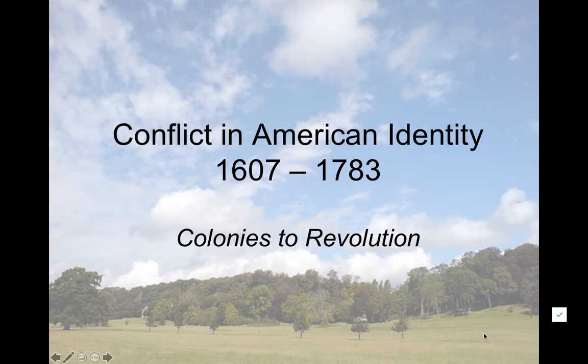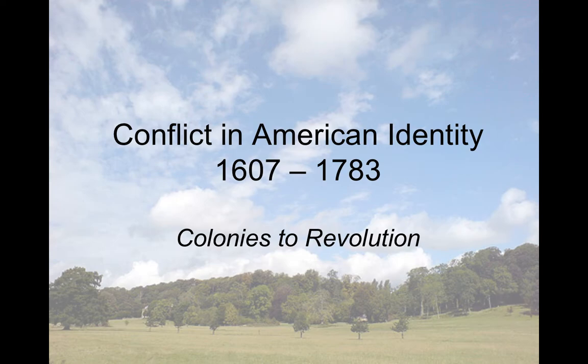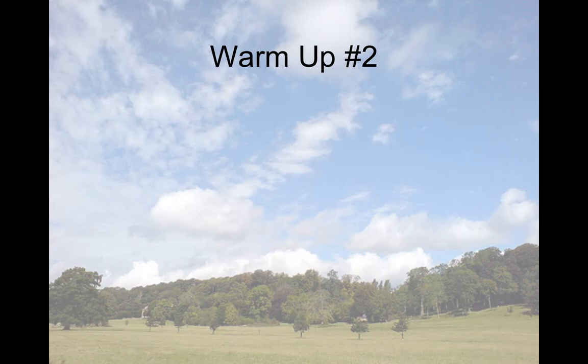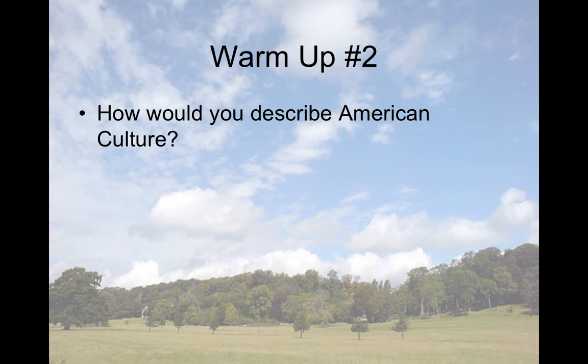Welcome, students, to a new set of notes. This is titled Conflict in American Identity, 1607-1783. We're going to look at different sections of American Identity. This is just a brief look — by no means extensive. The question I asked you was: how would you describe American culture? And this is going to look at how American culture develops, in brief.